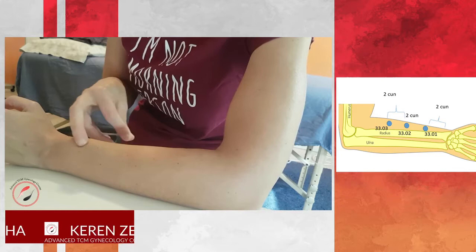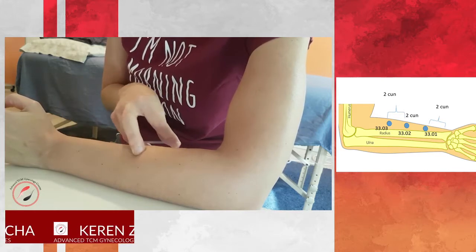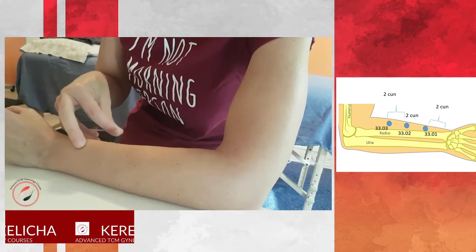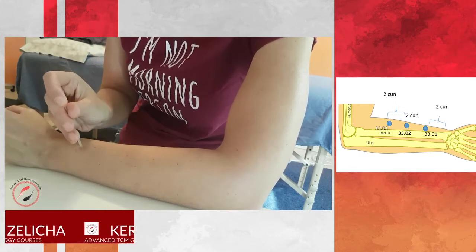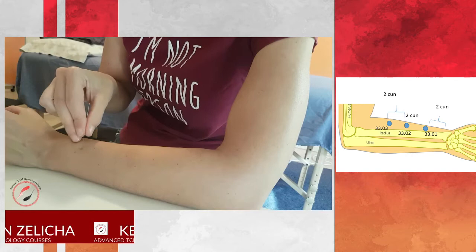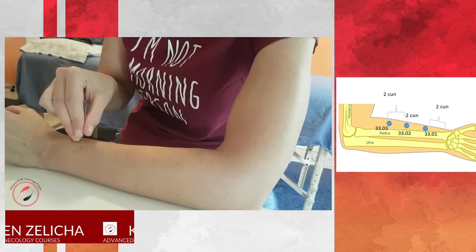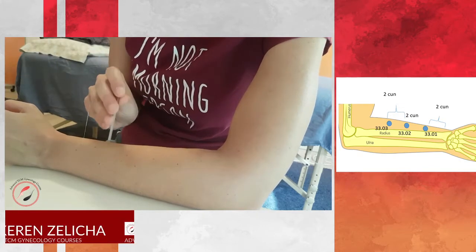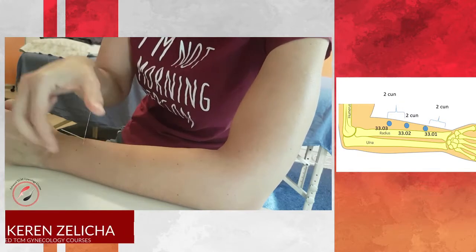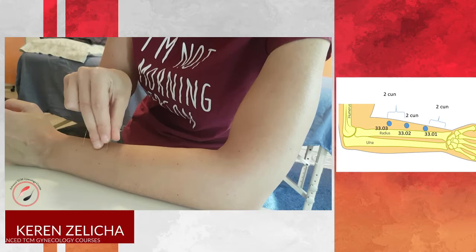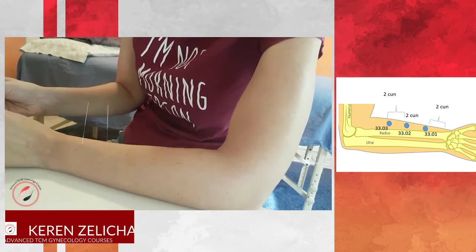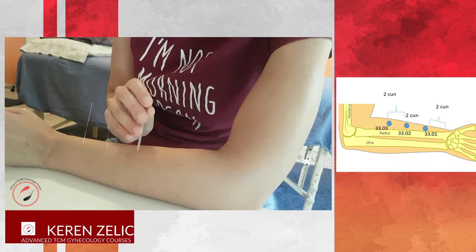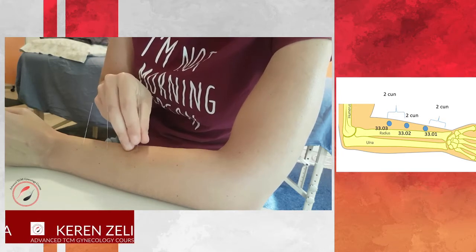When I puncture, I locate the radius bone above large intestine 5, and on the depression 2 cun above it, I puncture. Look at the angle of the needle. The second one is 2 cun proximal to the first one. And the third one would be also 2 cun above the medial one.